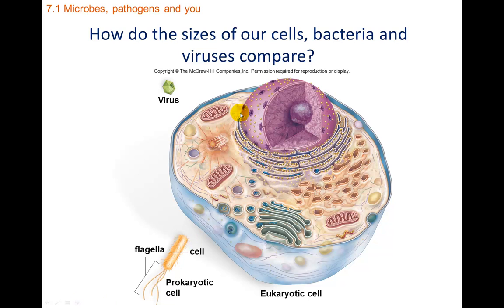Size-wise, what do these organisms look like? Viruses are itsy-bitsy, teeny-tiny. If this is a normal animal cell, you can see how much smaller a prokaryotic bacterial cell is by comparison. Here's a eukaryotic cell, which is way more sophisticated, and then here's a virus particle — just to give you some idea of the size difference.